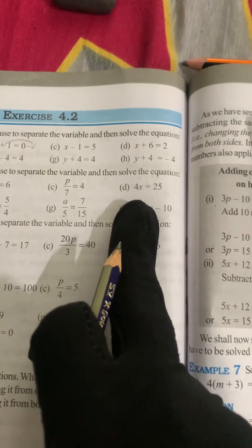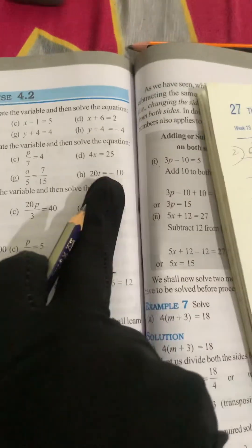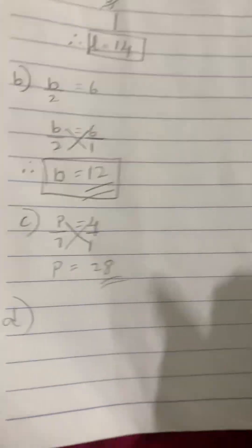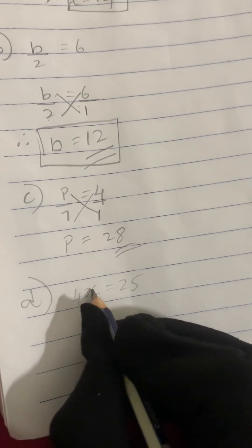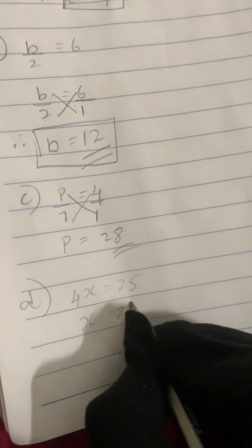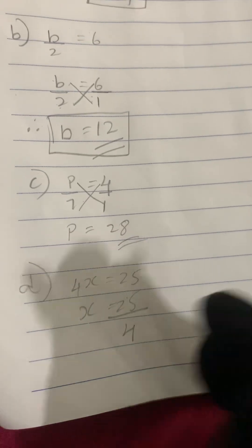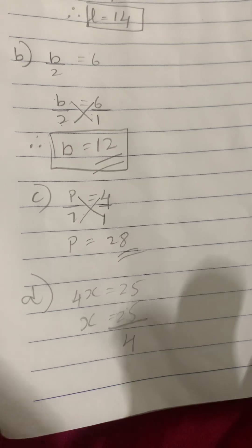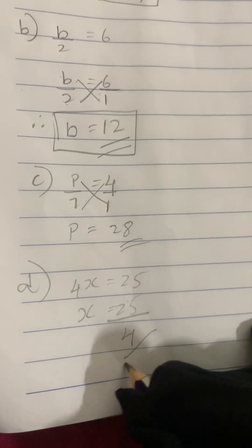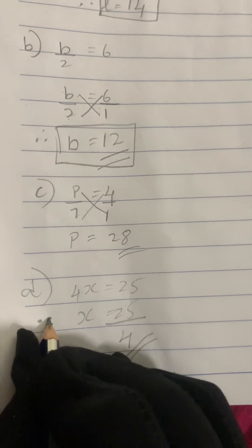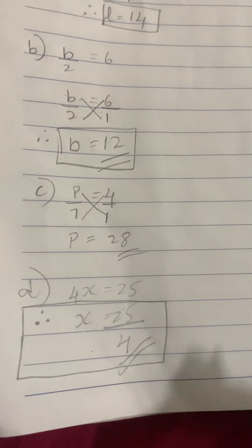Now let's solve the D question: 4x equals 25, same as the first sum. We take out the variable: x equals 25, and shift 4 into the denominator — that is 25 divided by 4. Since 25 doesn't go exactly in the 4-times table, we conclude x equals 25 divided by 4 as our final answer.